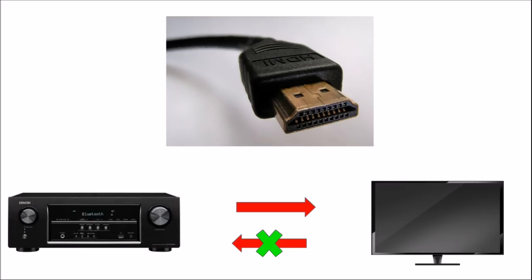Without ARC, AV receivers use one-way communication via HDMI. If you have an AV receiver, you can play a Blu-ray or cinema content through it, and then output to the TV.